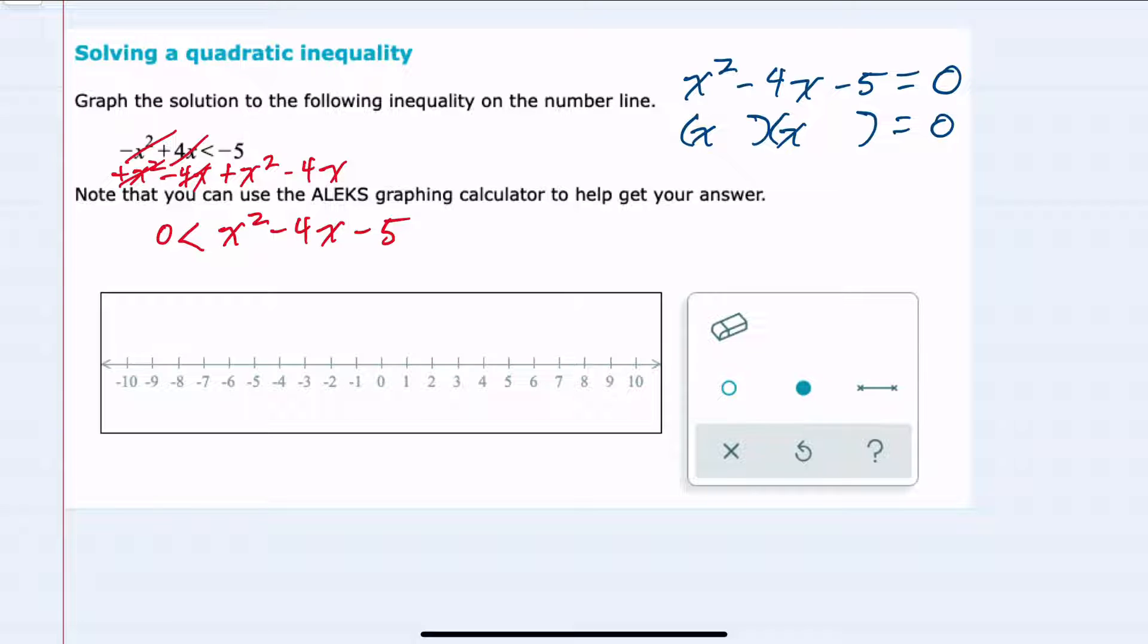The left hand side factors by trial and error with an x and an x. The factors of minus 5 would have to be 5 and 1, and I'll make the 5 negative and the 1 positive to give me a negative 4x in the middle.